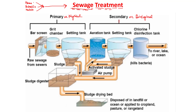The secondary treatment is called biological treatment because here microbes function to remove suspended solids and organic material from the sewage. In primary or physical treatment, all physical entities — floating debris and suspended solids — are removed. This occurs through two processes: filtration and sedimentation.